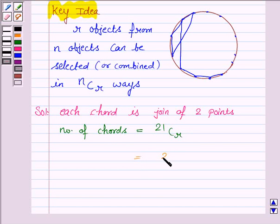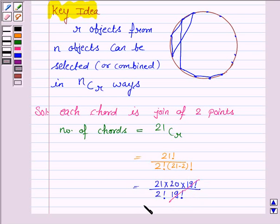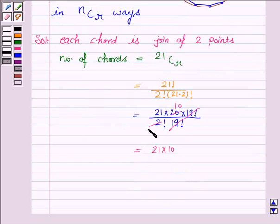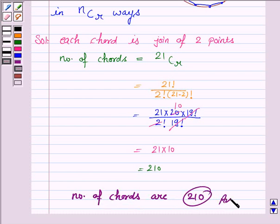And this is equal to 21 factorial upon 2 factorial into 21 minus 2 factorial. Now, 21 factorial can be written as 21 into 20 into 19 factorial. 19 factorial gets cancelled with 19 factorial and 2 into 10 is 20, and this is equal to 21 into 10 which is equal to 210.